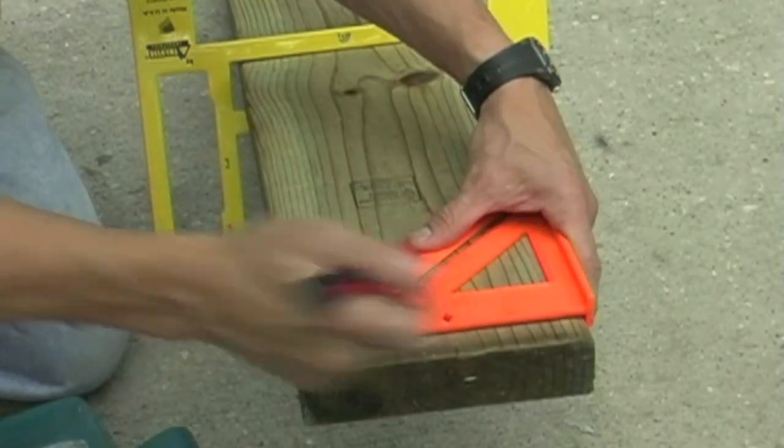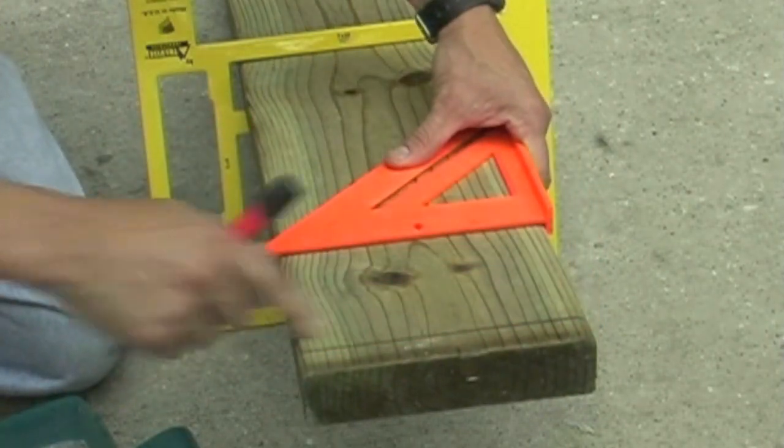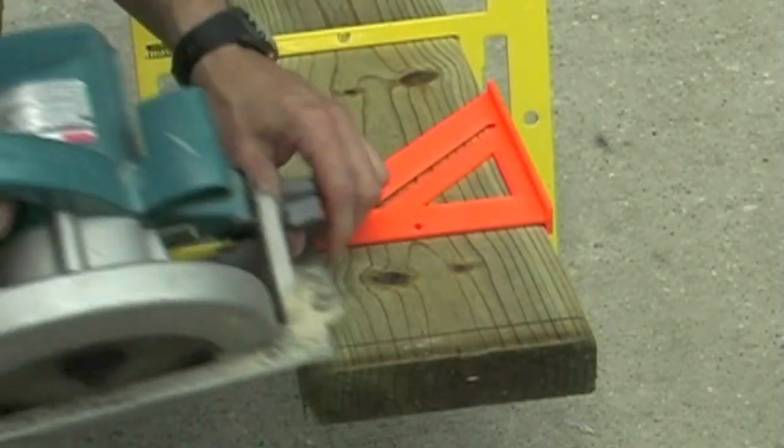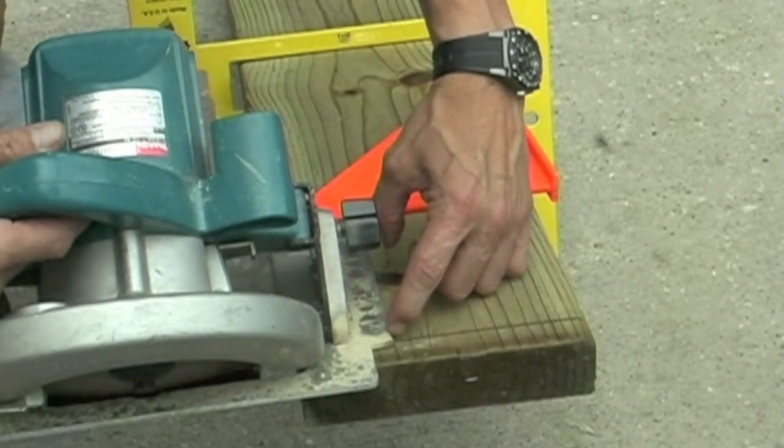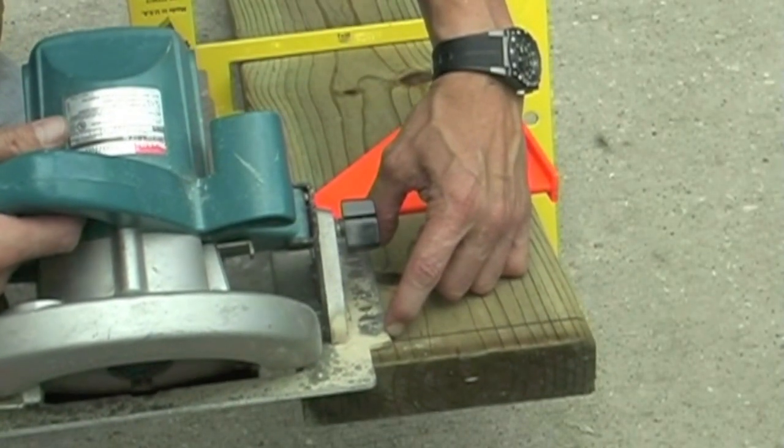I'm just going to take and mark a line. Now I'm going to line my saw blade up to match this line. On this Makita saw, I have a little groove that tells me exactly where my blade is going to go. This is awesome.